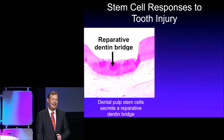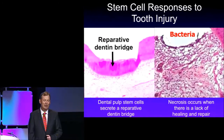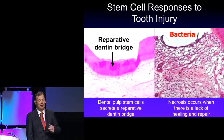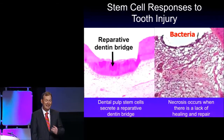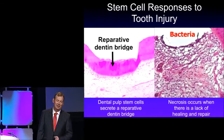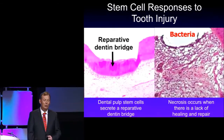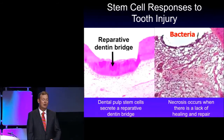The problem is if bacteria get into the site of the pulp exposure, which often happens, then in the presence of bacteria, the stem cells don't seem to be able to regenerate tissues. They don't seem to be able to heal, and we certainly don't get dentin bridge formation. So whenever we have infection, necrosis, or bacteria, we don't get healing.